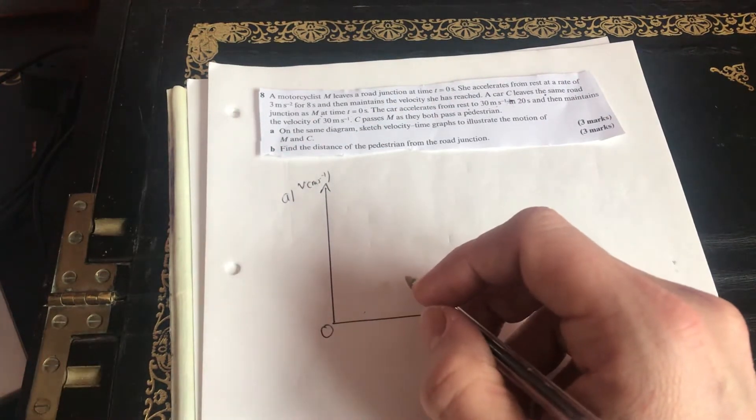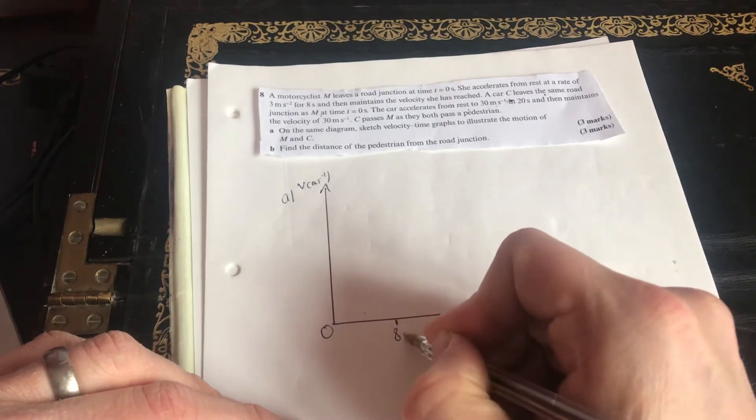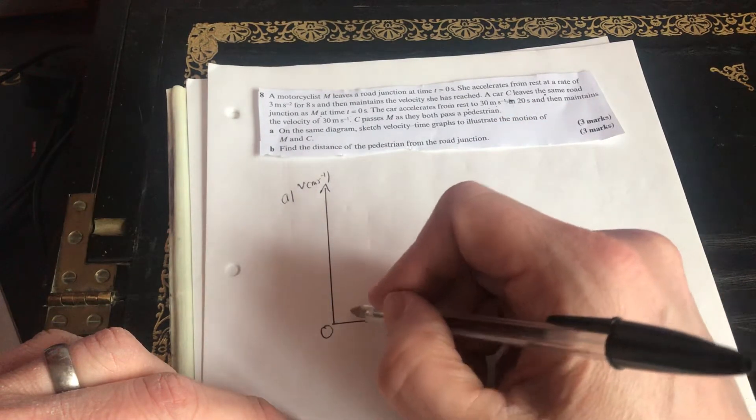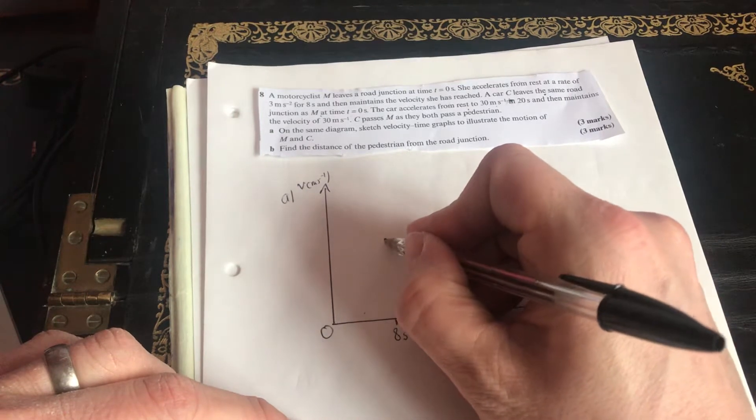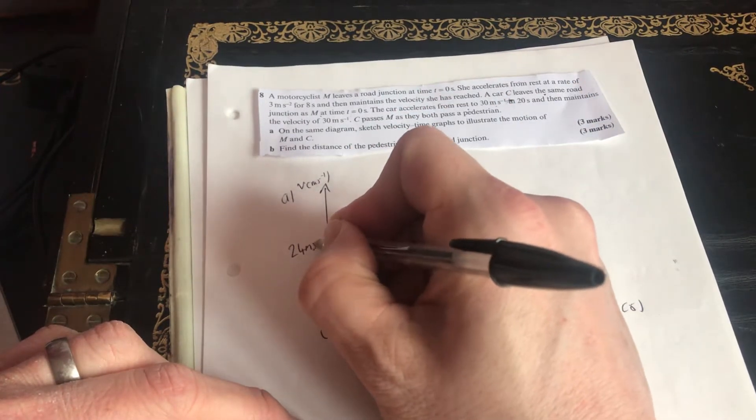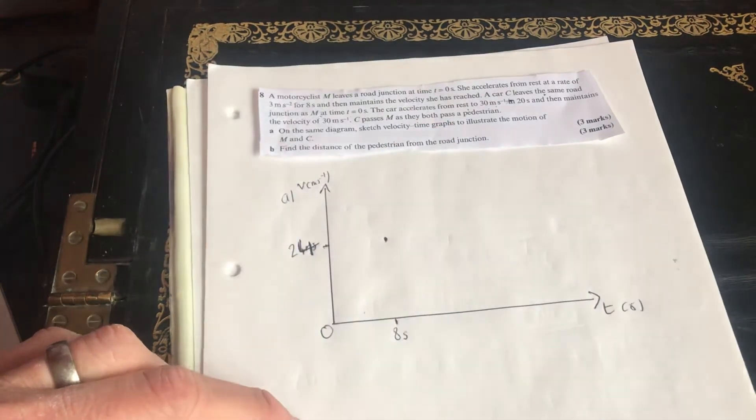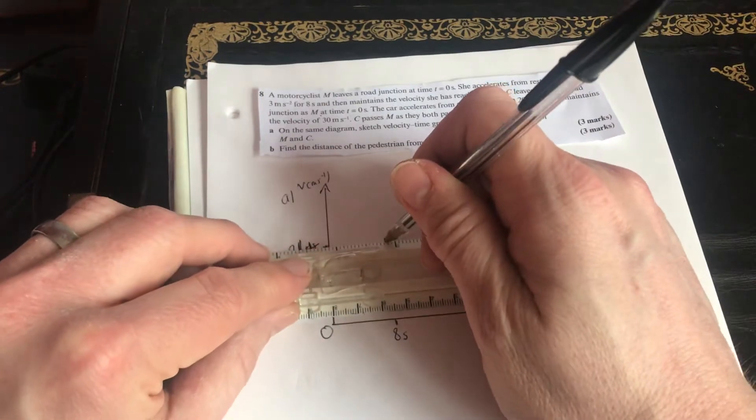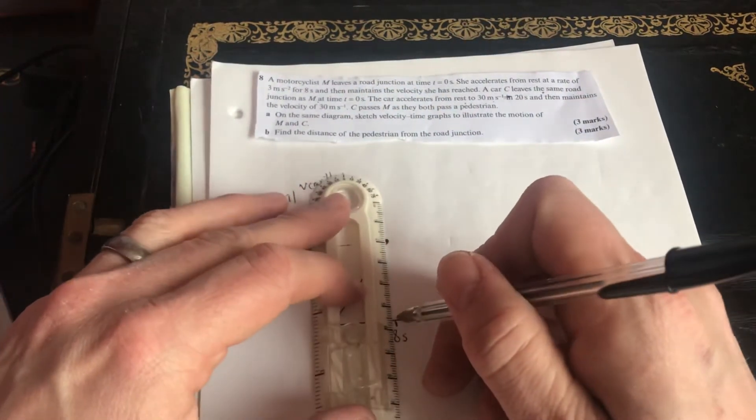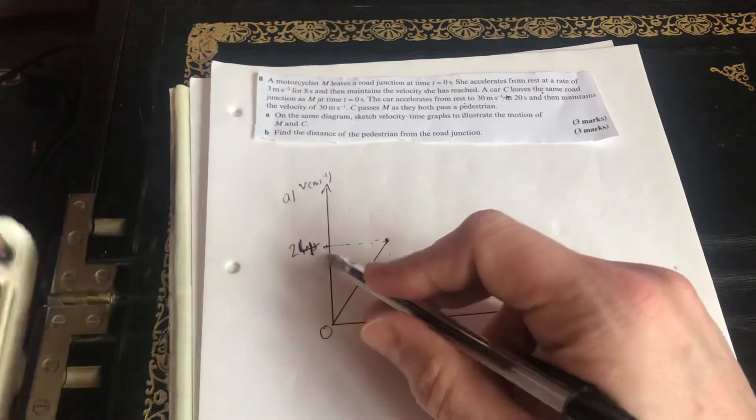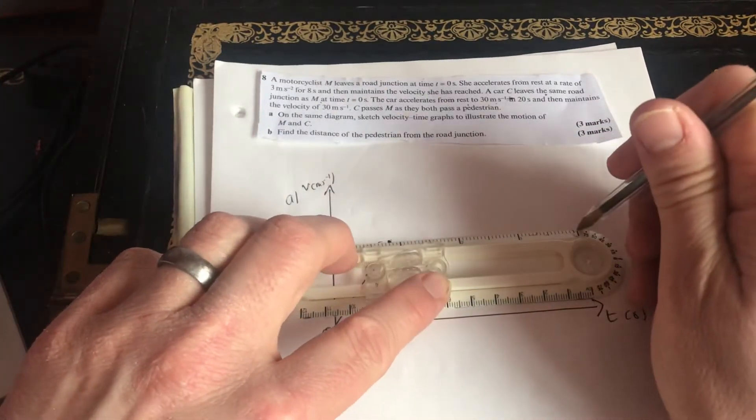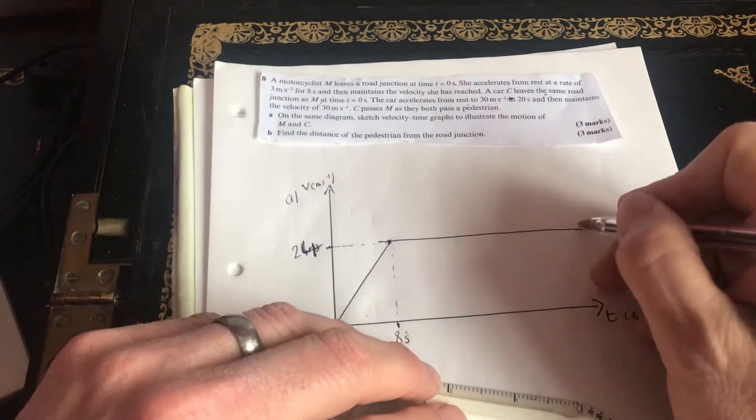So after eight seconds, the motorcyclist gets to, goes at three meters per second squared. So if you're traveling for eight seconds and you're accelerating at three meters per second squared, you're going to end up at 24 meters per second. So that's 24 there. So I just do a dotted line there. So 24 over eight would give you a gradient of three. So my acceleration is three. And then the motorcyclist just goes on like so.